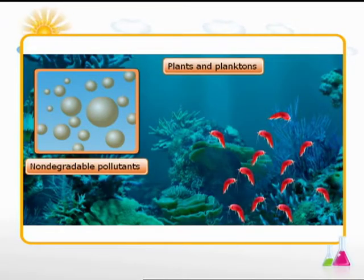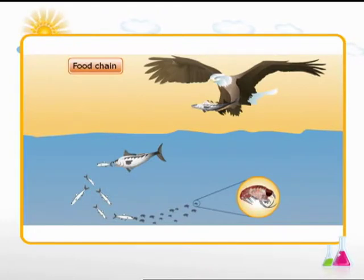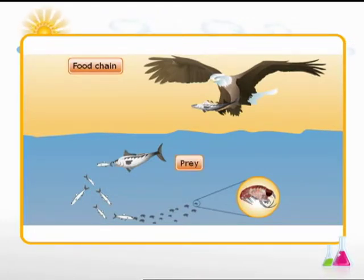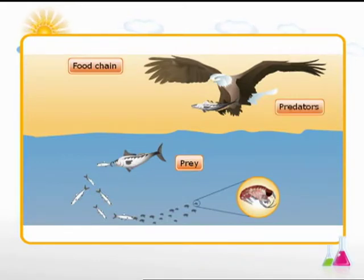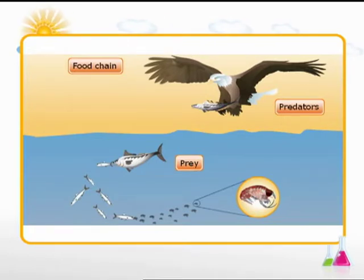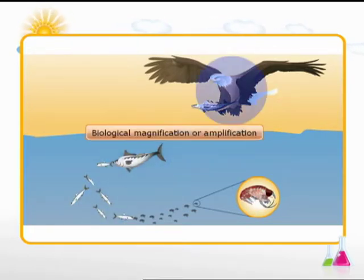Herbicides are used to kill weeds; if they are washed into streams and rivers, they cause pollution. The non-degradable pollutants are absorbed by plants and planktons and get circulated through the food chain. As they are stored in animal tissues, when consumed by predators, the concentration of toxic substances increases. This increase in harmful substances per trophic level is known as biological magnification or amplification.